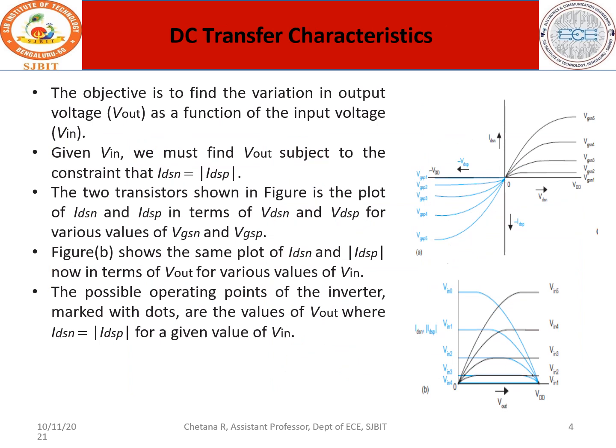The objective is to find the variation in output voltage versus input voltage. One condition has been assumed: IDSN is the drain current flowing in NMOS, and IDSP is the drain current flowing in PMOS. Because of their complementary working principles, if one current is positive the other is negative, so IDSN equals minus IDSP. Since the magnitude is considered, the negative is neglected and we state IDSN equals the modulus of IDSP.